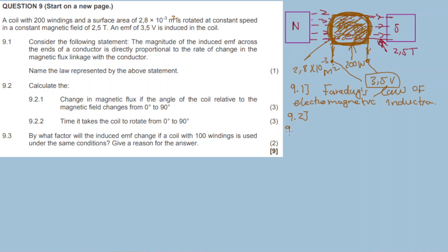Question 9.2.1: calculate the change in magnetic flux if the angle of the coil relative to the magnetic field changes from 0 degrees to 90 degrees. The formula for the change in magnetic flux is: delta phi equals B times A times cos theta. So our calculation uses B equals 2.5 teslas, A is the surface area.